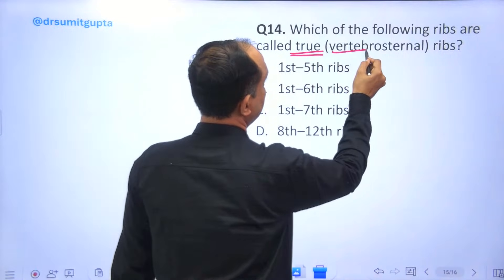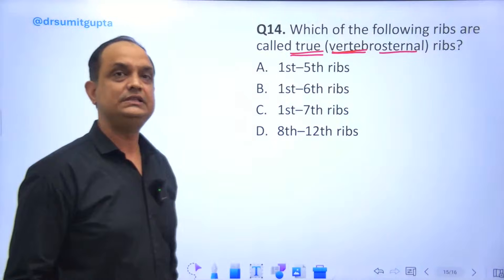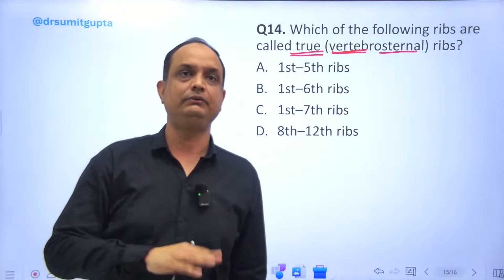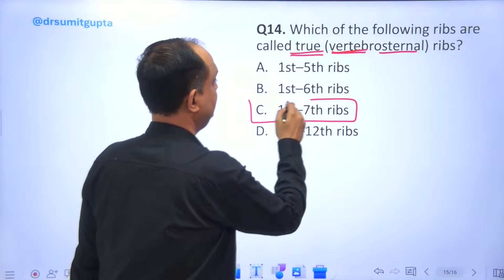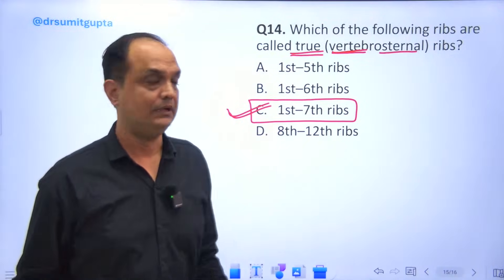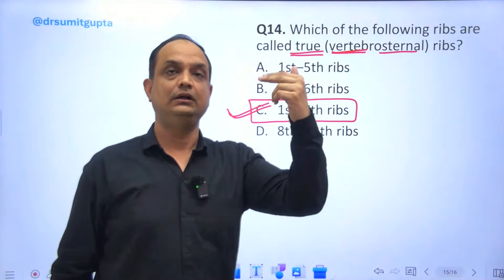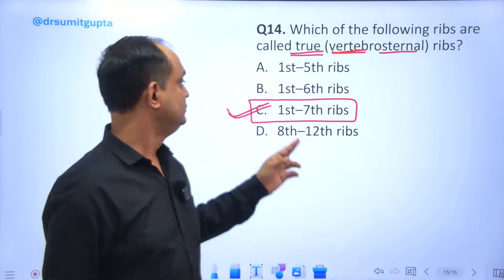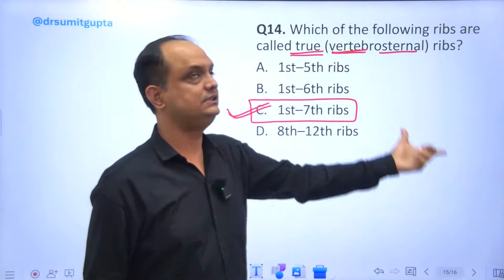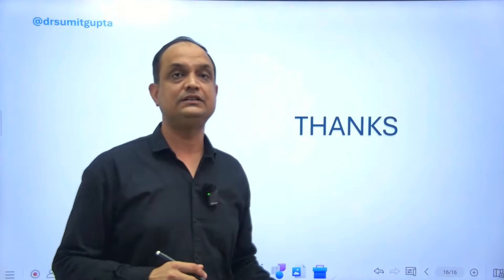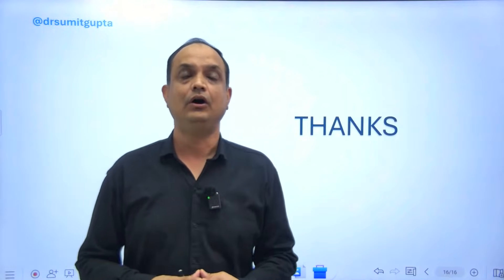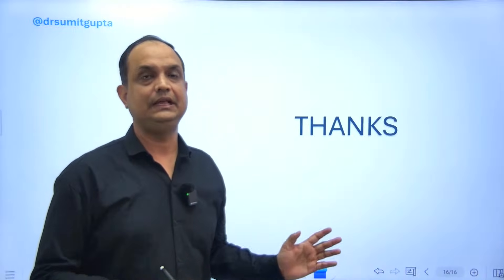Which of the following ribs are called true ribs? True ribs are connected posteriorly to the vertebral column and anteriorly to the sternum. All 12 ribs connect posteriorly to the vertebral column, but only the upper seven — ribs one to seven — have a direct anterior connection with the sternum. After rib seven, the ribs connect with the succeeding costal cartilage, not the sternum. So ribs one to seven are known as true ribs, also called vertebrosternal ribs. This concludes the MCQs from the first chapter of thorax anatomy.